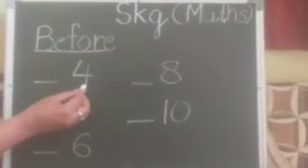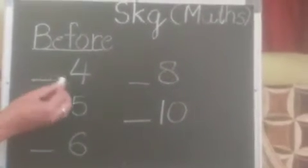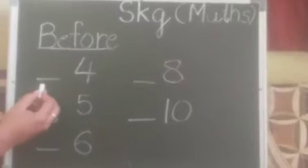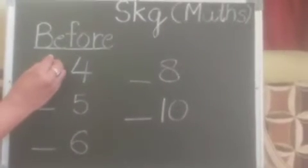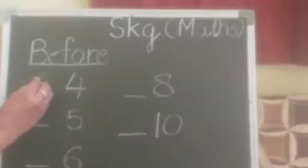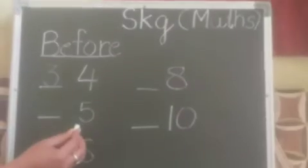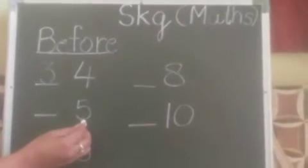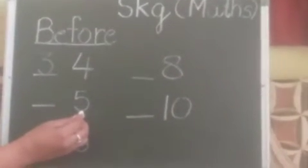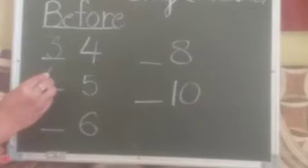Like here I write 4. 4 say before means pehli — kya hata hai counting me? 3. So here I write 3. Here I write 5. So what comes before 5? 4.